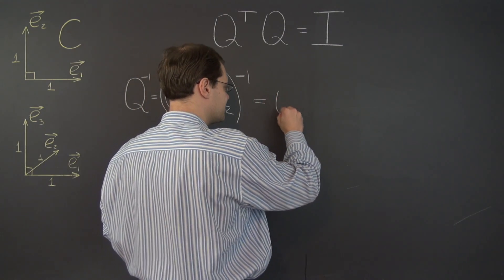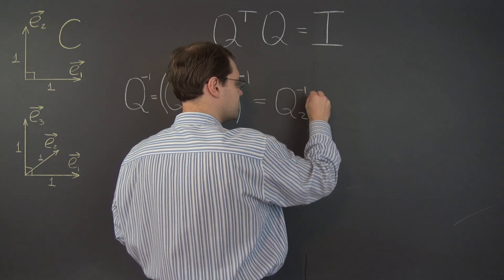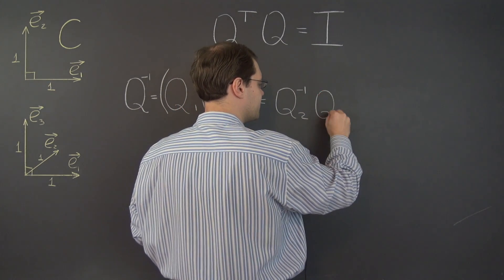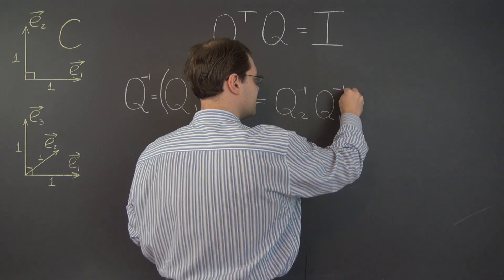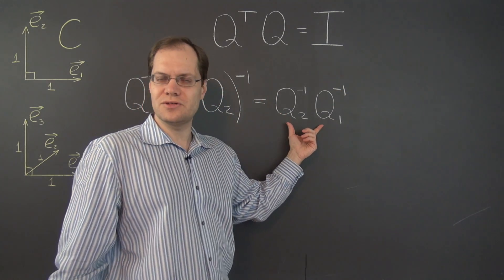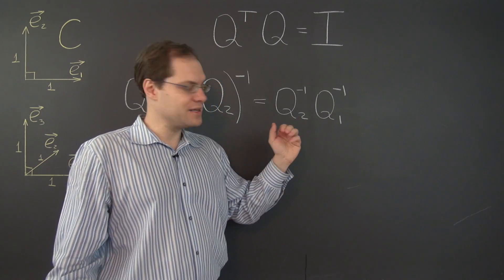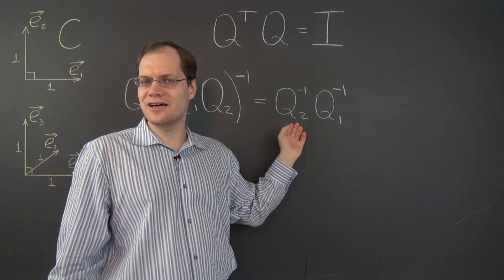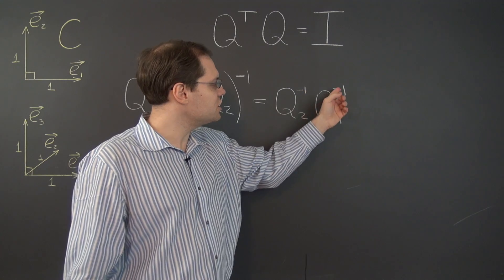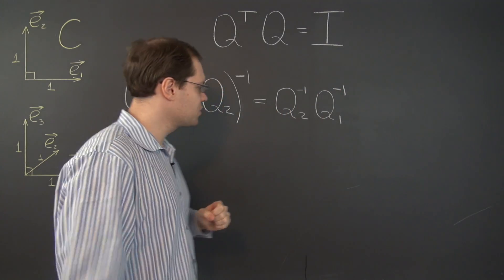So here we go, this inverse is Q2 inverse times Q1 inverse, the product of the individual inverses in the opposite order. Now we recall that each one of these matrices are orthogonal, so each inverse is the transpose of the corresponding matrix.